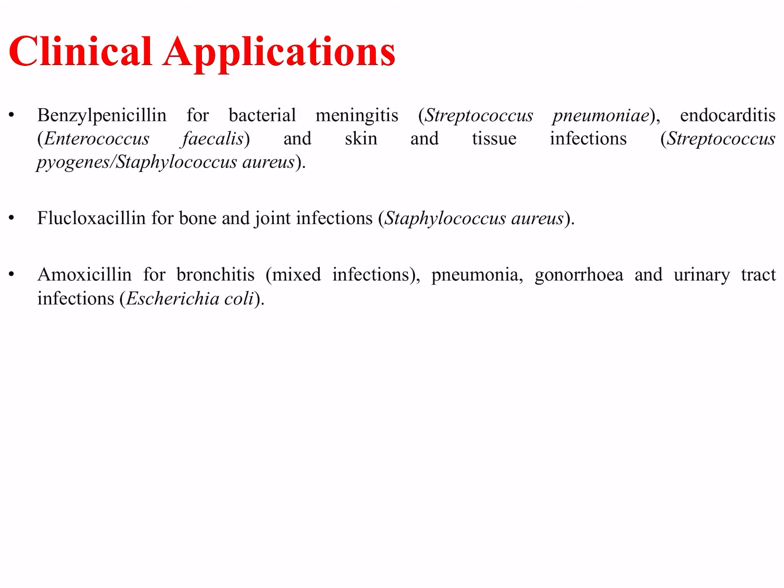Benzyl penicillin is used for bacterial meningitis, infections with Streptococcus pneumoniae, endocarditis, and skin and tissue infections. Flucloxacillin is used for bone and joint infections. Amoxicillin is used for bronchitis, pneumonia, gonorrhea, and some urinary tract infections, as well as many other mixed infections.